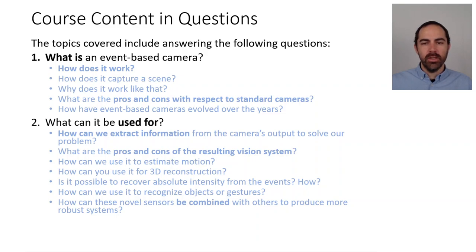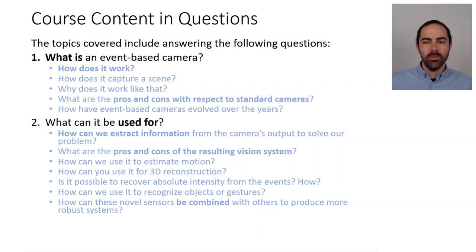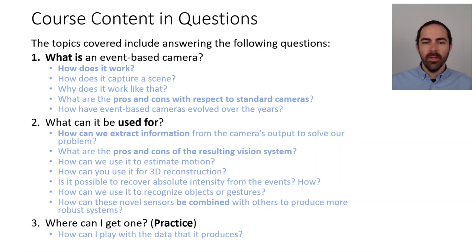How can we use it to recognize objects or gestures — not only motion estimation but also classification? And how can we combine these novel sensors with other ones such as an IMU, a grayscale camera, or a depth sensor to produce more robust real systems? And third: where can I get one, and where can I find data to practice with? These are more or less the contents of the course.